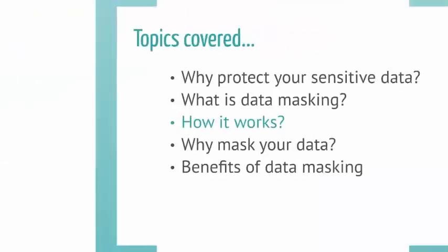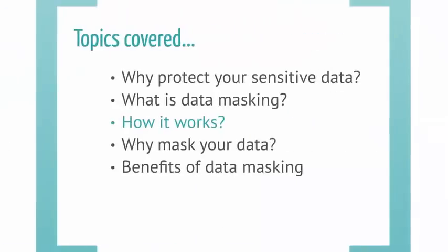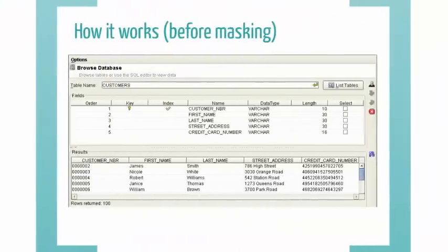So how does it actually work in a real database setting? On your screen, you will see a snip from the Camouflage user interface displaying five customer records in a database before masking has taken place. The records have five fields showing the customer ID, first and last name, street address, and most sensitive, their credit card number.